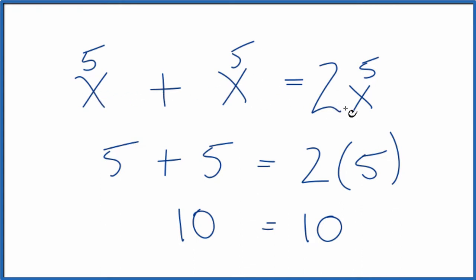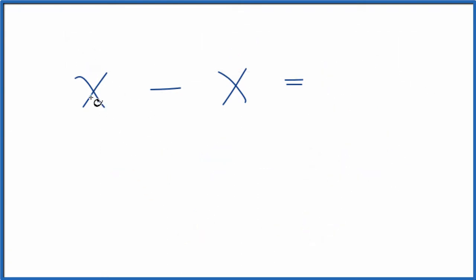This works. When we have x plus x, we just add them together to get 2x. But what if it's x minus x? In this case, we have 1x minus 1x. That's just 0.